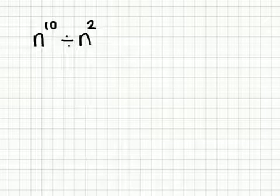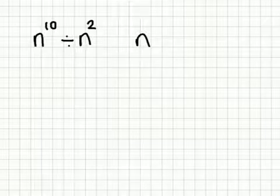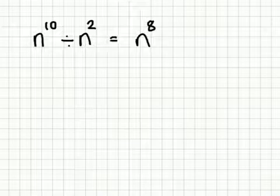When we think about dividing when we're using indices, we need to think back to what we did when we multiplied, and remember that divide and multiply are the inverse of each other. So when we multiplied, we added the powers. So when we divide, it's just logical that we subtract the powers. So with something like this, the answer would be n to the power 10 take away 2 is 8. So the answer to this is n to the power 8.